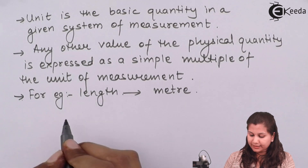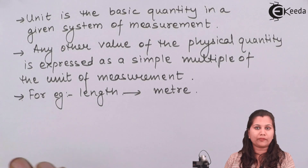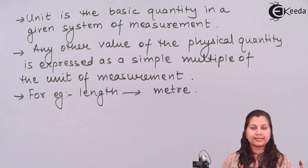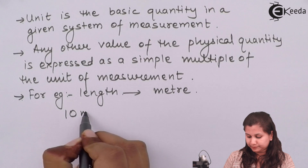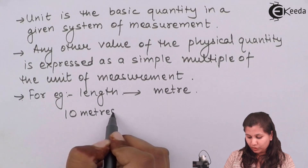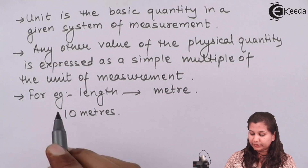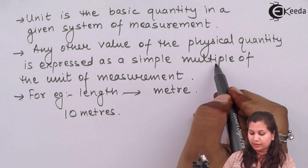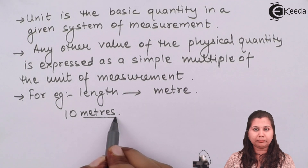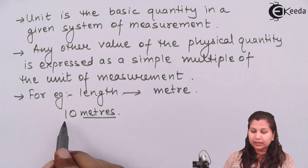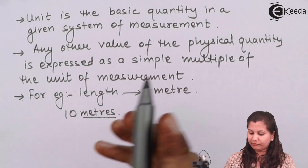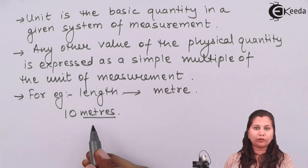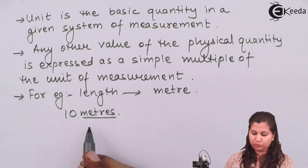Suppose the length of this wall is 10 meters. So 10 is the multiple and the basic unit is meters. As I have said, all other physical quantities will be expressed as multiples of the basic unit of measurement.